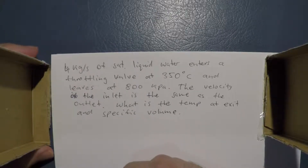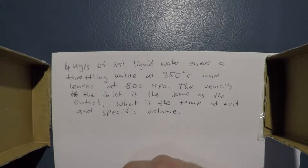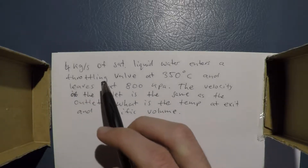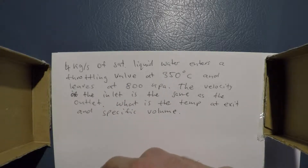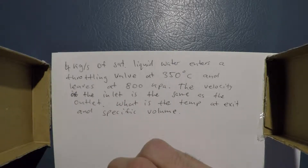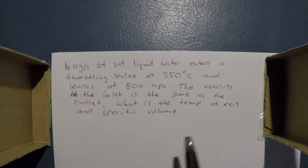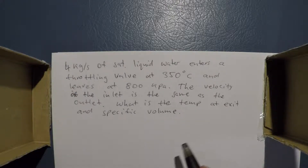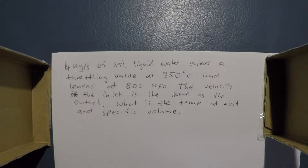This question concerns a throttling valve. 4 kilograms of saturated liquid water enters a throttling valve at 350 degrees and leaves at 800 kilopascals. The velocity at the inlet is the same as at the outlet. What is the temperature at exit and specific volume at the exit?